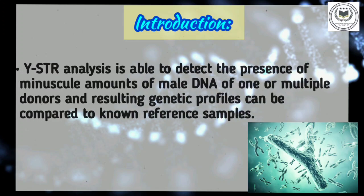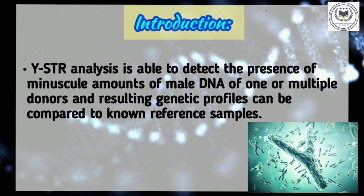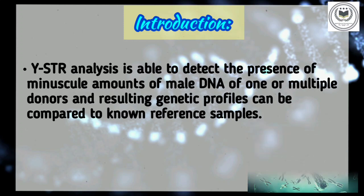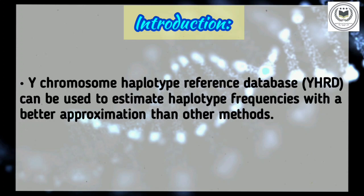Because of the presence of the Y-chromosome in male DNA, Y-short tandem repeat analysis is able to detect the presence of very little amounts of male DNA from one or multiple donors, resulting in a genetic profile that can be compared to non-reference samples. The STR markers are located on the Y-chromosome, and the Y-chromosome haplotype reference database is used to analyze and interpret DNA evidence in sexual assault investigations.